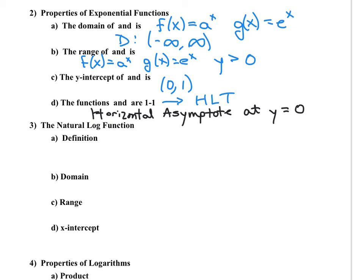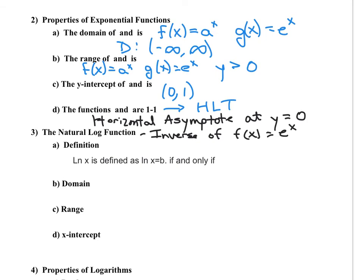Let's take a look at the natural log function. The natural log function is important because it is the inverse of f of x equals e to the x. The natural log of x is defined as: the natural log of x equals b if and only if x equals e to the b. The domain of the natural log function is from 0 to infinity, and the range is from negative infinity to infinity. Since these are inverse functions, the domain of the inverse is the range of the original, and the range of the inverse is the domain of the original.